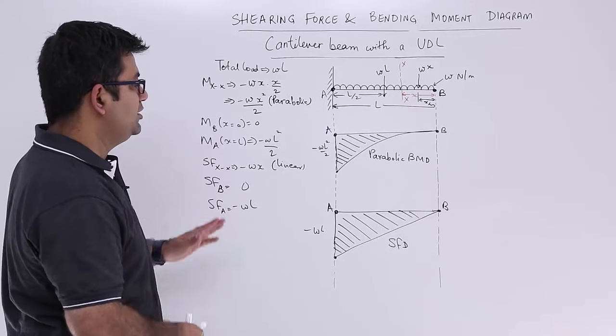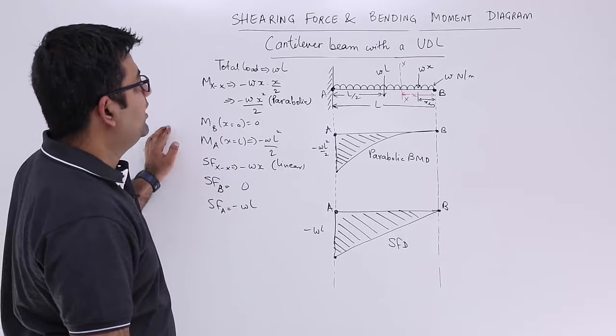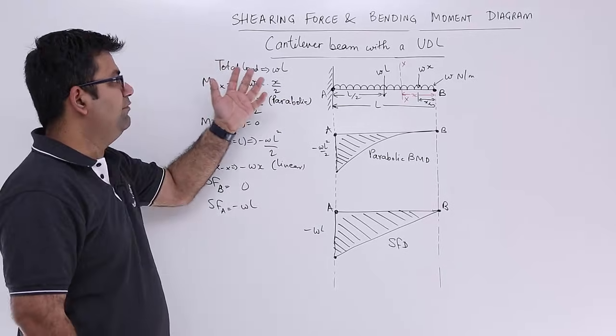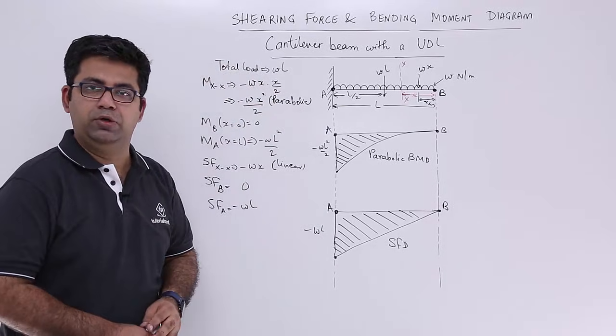So this is how you draw the SFD and BMD for a cantilever with a UDL. Now let us move to the cantilever beam with a gradually varying load.